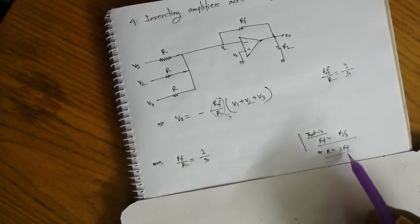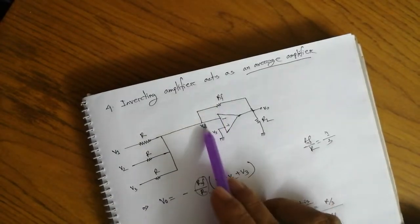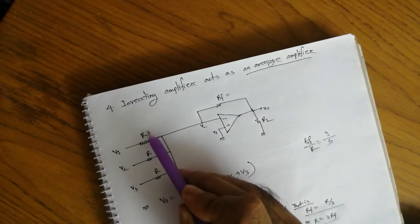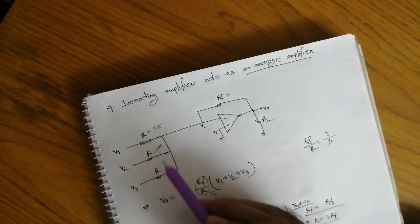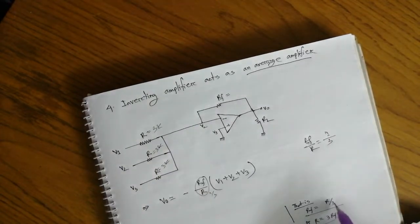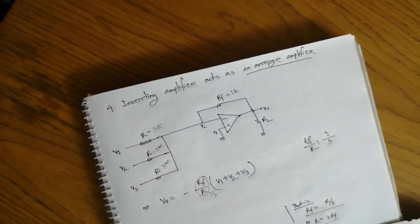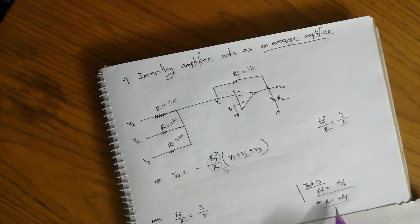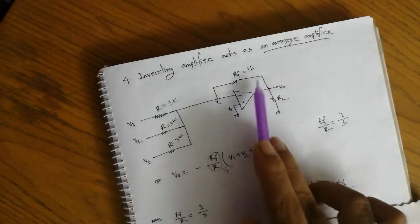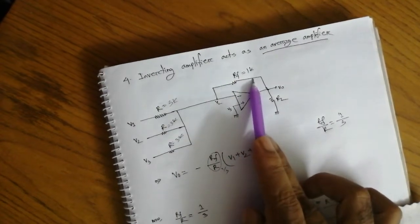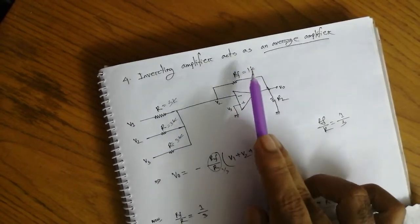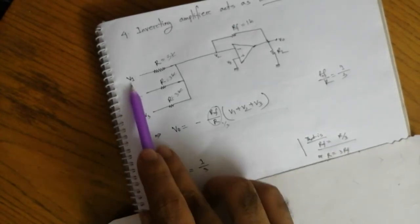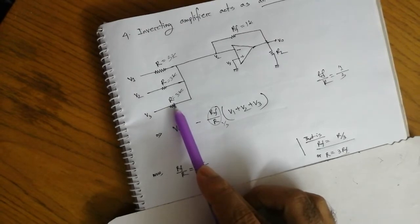So we set Rf equal to R divided by 3, meaning R equals 3·Rf. We connect the resistors accordingly: if Rf is 1 kΩ, then each input resistor R should be 3 kΩ. For n inputs, the input resistors scale as n·Rf. This gives the true averaging output.